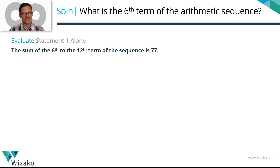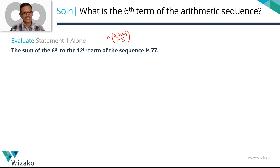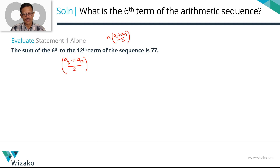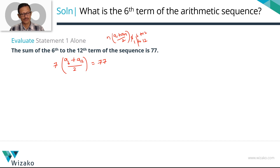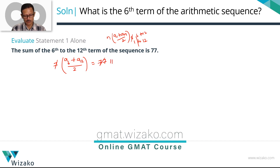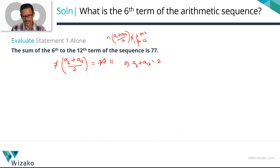Statement 1 says the sum of the 6th to the 12th term of the sequence is 77. Using the sum formula: the first term in this set is a_6, the last term is a_12, and the number of terms from the 6th to the 12th is 7. So: 7 · (a_6 + a_12) / 2 = 77. Dividing both sides by 7 gives 11 on the right, then cross-multiplying gives a_6 + a_12 = 22.